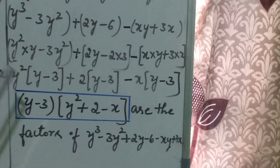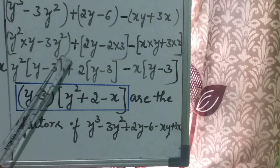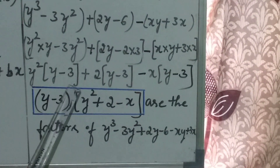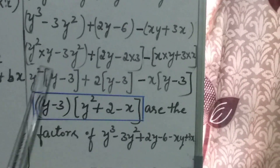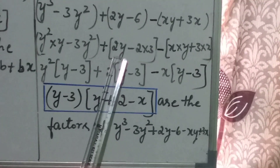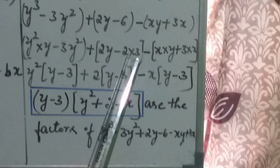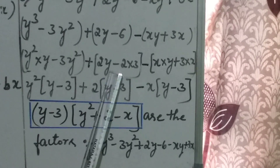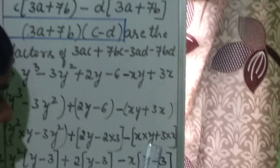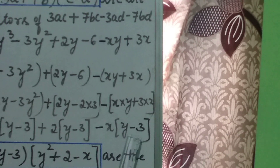Now take the common factors from each group. In the first group, y square is common in both terms. Taking y square outside, the remaining terms are y minus 3. In the second group, the constant 2 is common. Taking 2 outside gives 2 into y minus 3. In the third group, x is the common term. Taking x outside gives x into y minus 3.